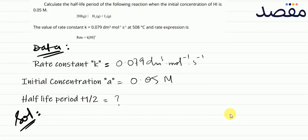Question is, calculate the half-life period of the following reaction when the initial concentration of hydrogen iodide is 0.05 molality.